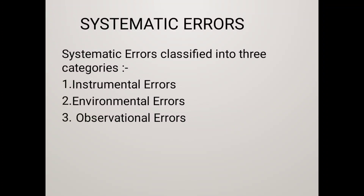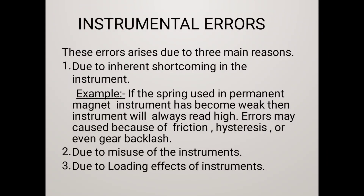Instrumental Error refers to the shortcomings of the instruments due to their mechanical structure. For example, friction in the bearing of various moving parts, irregular spacing, reduction in attention due to improper handling, hysteresis gear backlash, and stretching of spring. These errors can be avoided by selecting a proper instrument and recognizing the effect of such errors and applying proper correction factors.